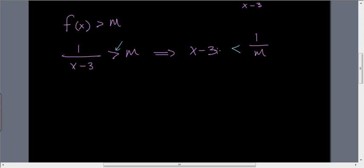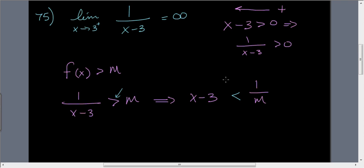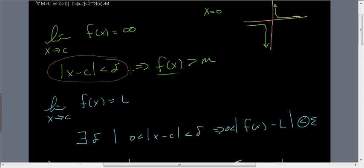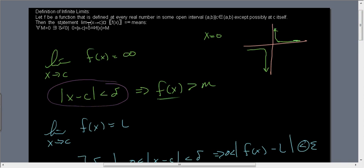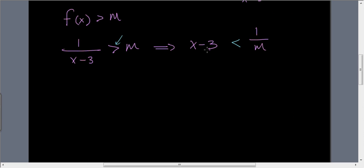But now, up here, we said that x minus 3 is greater than 0. And from the assumption, m has to be greater than 0. So from the assumption, m has to be greater than 0. So that means that all of this is greater than 0, which means that the absolute value of x minus 3 is also less than the absolute value, or 1 over the absolute value of m.